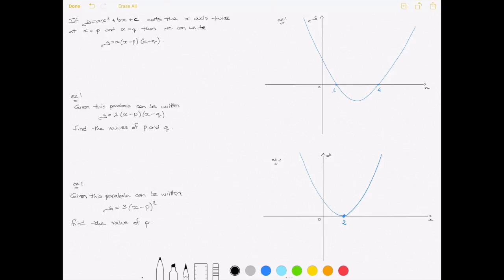If, on the other hand, it cuts the x-axis once at, say, x equals p, then we can write the parabola's equation as y equals a times x minus p squared.